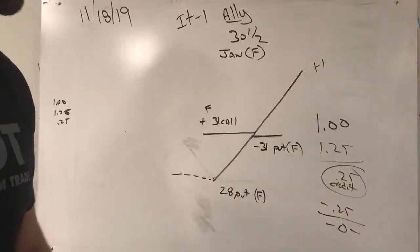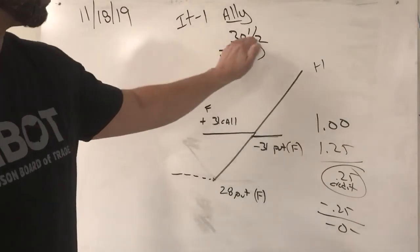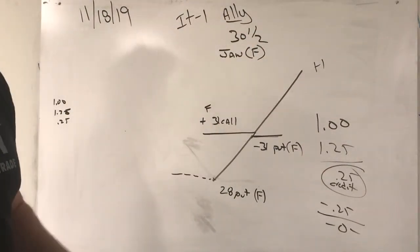And if the stock goes up the way I expect it to, or the way IT1 expects it to, we're gonna be able to participate as it goes up above thirty-one. And it's trading thirty-half currently until January. And we can take this trade off at any time.